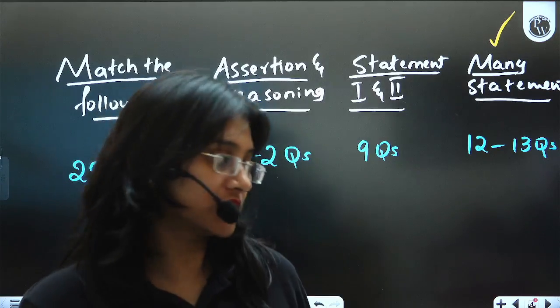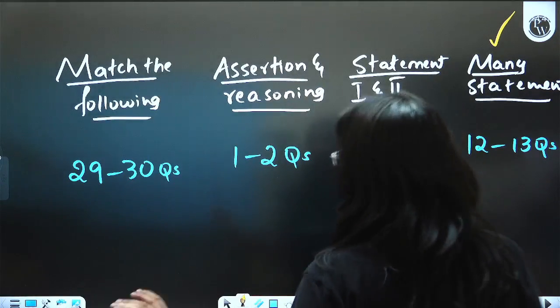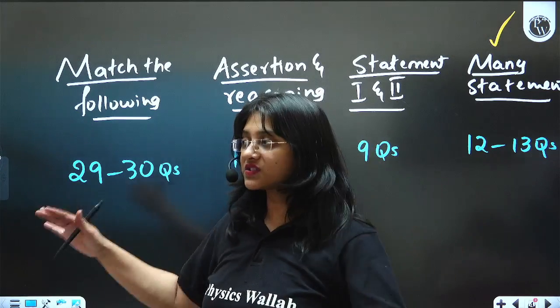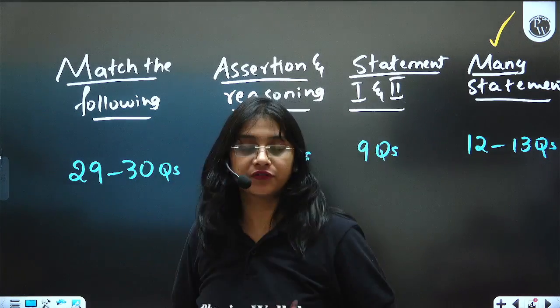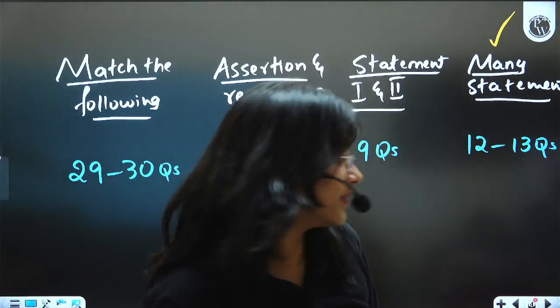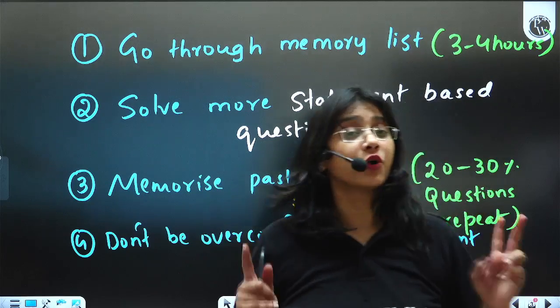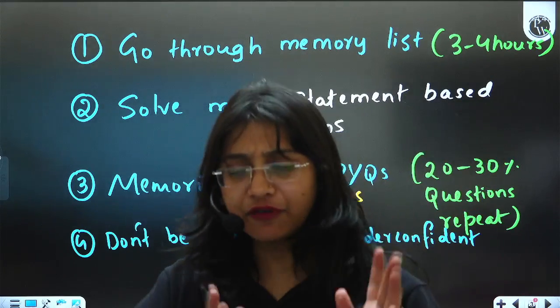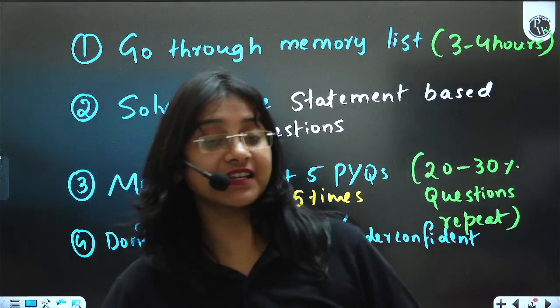Rest of the questions are going to be direct questions, ABCD option questions. So you need not be underconfident. All you have to do is solve more such questions to be confident and your NEET exam is going to be really easy and you all would be scoring at least 340-350 out of 360 in NEET biology.